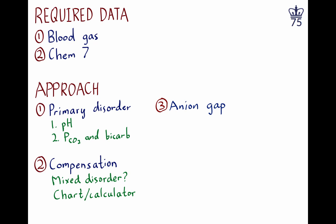If you have a very wide anion gap — if it's over 20 — we call this patient as possessing metabolic acidosis with gap. The anion gap is essentially composed of albumin; serum albumin contributes between 2 to 4 for every gram to the anion gap. No matter what else is going on, if your anion gap is over 20, there is a wide gap metabolic acidosis.